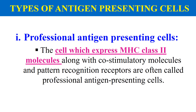Professional antigen presenting cells have class 2 MHC molecules. They internalize the antigen, degrade it into small peptide fragments, and this peptide fragment is then complexed with the class 2 MHC molecule. Finally, this complex of antigen and class 2 MHC molecule is expressed and displayed on their surface, where it is visualized by T lymphocytes. T lymphocytes come and interact with this complex of antigen and MHC class 2 molecule. Cells which have class 2 MHC molecules and show the property of antigen presentation are known as professional antigen presenting cells.